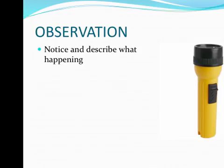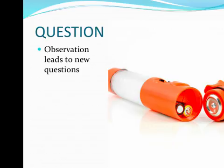The first step is observation. You're going to notice and describe what is happening. I'm going to use an example throughout the explanation of the scientific method of a flashlight that's not working. So my observation is that my flashlight doesn't work. The second step of the scientific method is the question, because my observation is going to lead me to a question. So what's wrong with my flashlight?